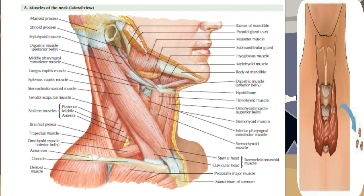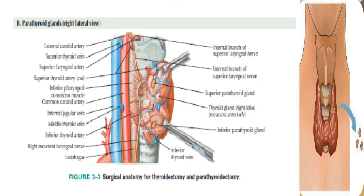The right and left sternohyoid muscles are separated along the median raphe from the thyroid cartilage superiorly to the sternal notch inferiorly. The median raphe is avascular and consists of the pretracheal or deep cervical fascia over the thyroid gland and trachea. The sternothyroid muscle is freed from the anterior surface of the thyroid lobe, and the sternothyroid and sternohyoid muscles are retracted laterally. These muscles may be divided when additional exposure is necessary, especially for patients with large goiters, at the level of the cricoid cartilage to avoid injury to the ansa cervicalis.